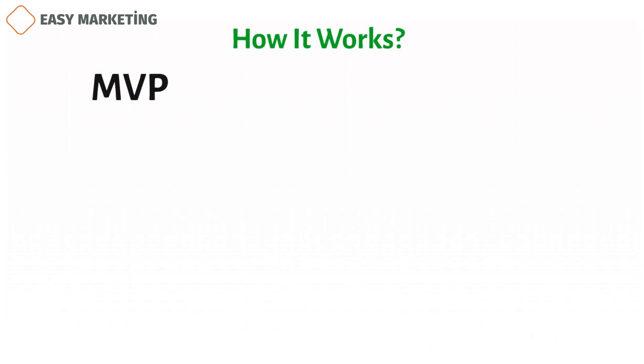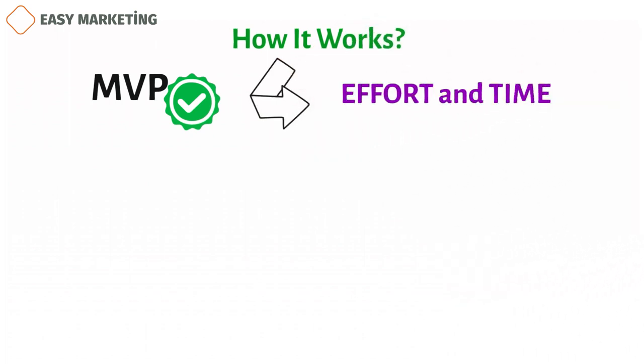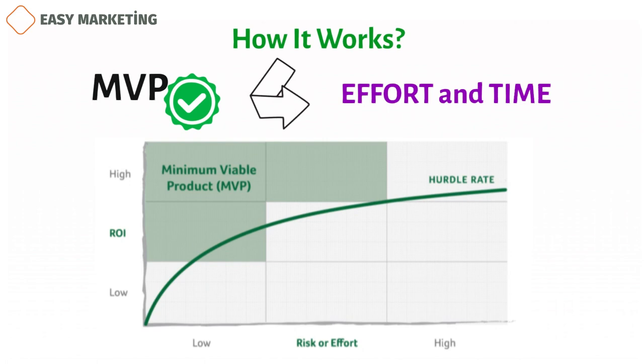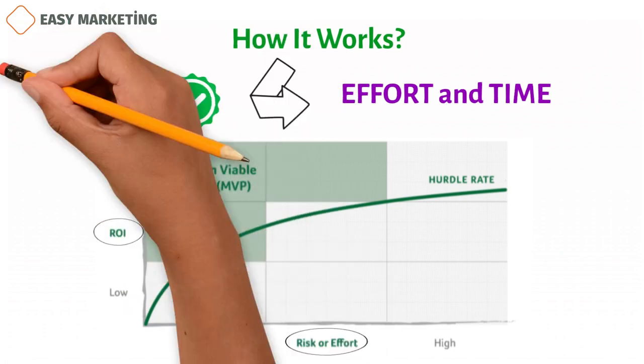The minimum viable product, MVP, is the best way to balance risk and return on investment, ROI, which is strongly linked to effort and time to market. Robinson shows MVP with the help of a grid. On the vertical axis, risk or effort is plotted against ROI, which is on a horizontal axis.